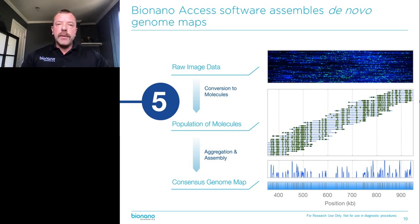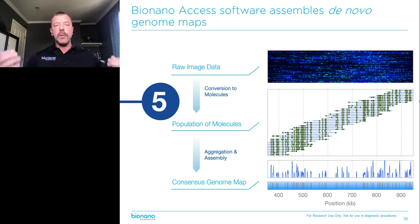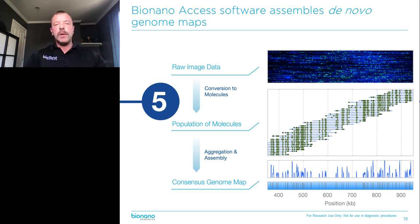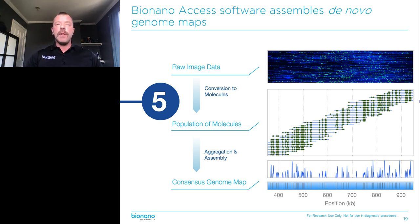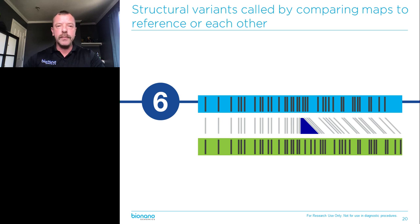Once these images are collected, the instrument analyzes them and identifies the molecules in each picture. The digital representation of these molecules is then aligned with each other pairwise in a complete de novo assembly of the genome. That is an incredibly powerful and compute-intensive procedure where we pairwise align every molecule we image with every other molecule. We build consensus genome maps that represent the average spacing of the labels on each molecule that we imaged.